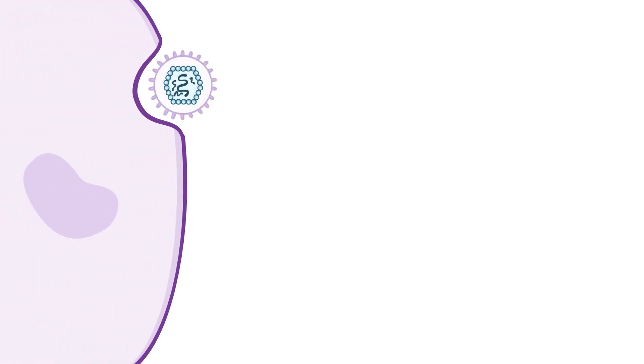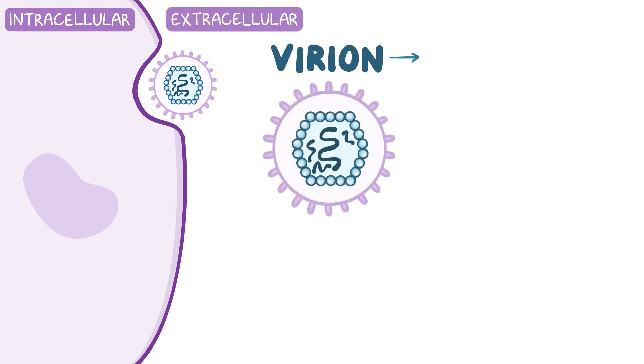Viruses can exist either extracellularly or intracellularly. In the extracellular state, the virus is called a virion and isn't capable of reproducing. A virion consists of a protein coat called a capsid, surrounding a nucleic acid core, which contains the genetic material or the viral genome. The nucleic acid and the capsid are collectively called a nucleocapsid.